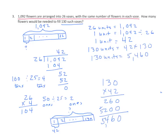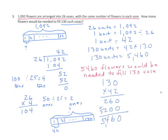Now I need to make my statement: 5,460 flowers would be needed to fill 130 vases. I hope that this shows the relationship between inverse operations — the diagrams are similar, but in one case we know the whole and have to find the parts, and in the other case we have the parts and need to find the whole.